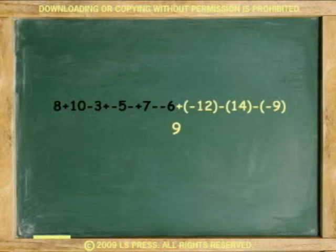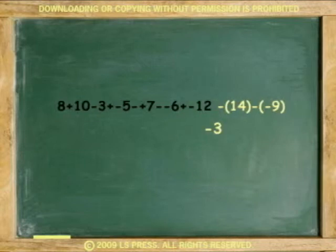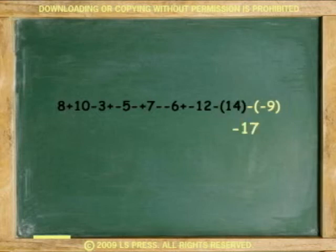Having a parenthesis is the same as not having one — ignore it and continue. Next, add negative 12 and go down beyond 0 to negative 3, the negative side of the number line. Next, subtract positive 14 and go down to negative 17 — taking good away makes it go down further. Finally, subtract negative 9 and go up to negative 8 — taking bad away makes it go up.